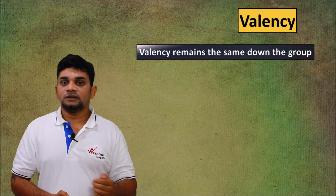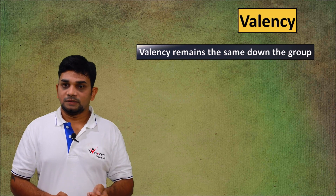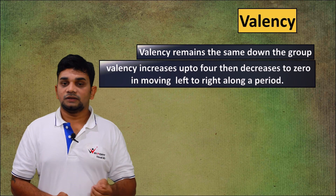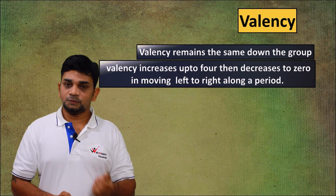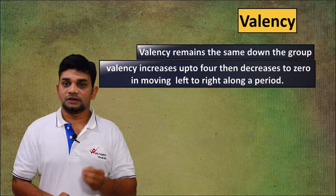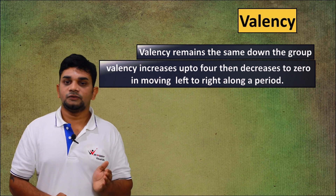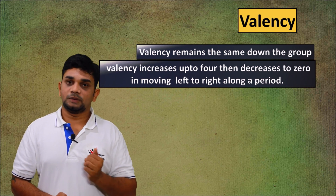In summary: valency remains the same down the group, and valency increases up to 4 then decreases to 0 when moving from left to right along a period.